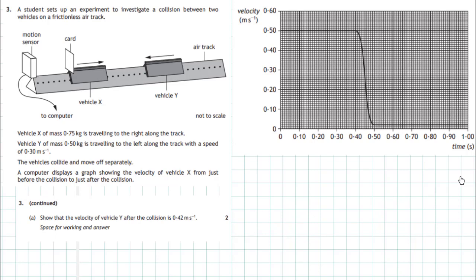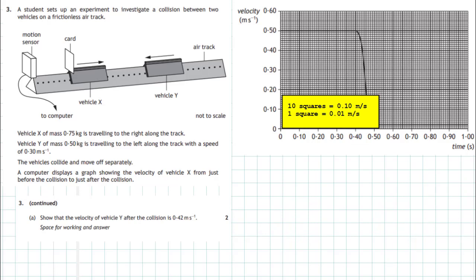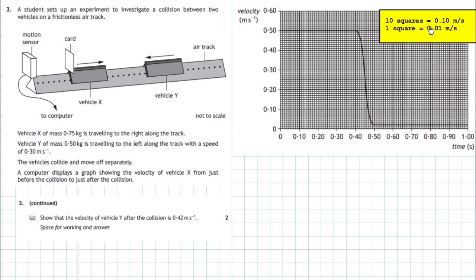We get the velocity of vehicle X from the graph, which was produced by the motion sensor. Before starting the question, get to know the scale of the graph. Looking closely, 10 squares on the velocity axis equals 0.10 meters per second, so one square is 0.01 meters per second. The initial velocity of vehicle X is 0.50 meters per second from the graph. After the collision, the graph drops down and the velocity of vehicle X falls to just two squares above the time axis, giving a velocity of 0.02 meters per second.